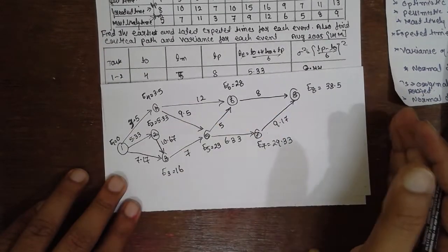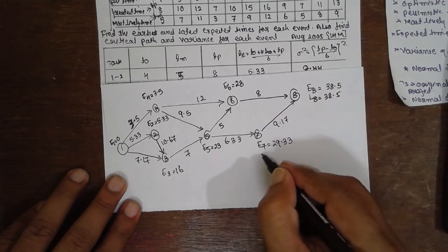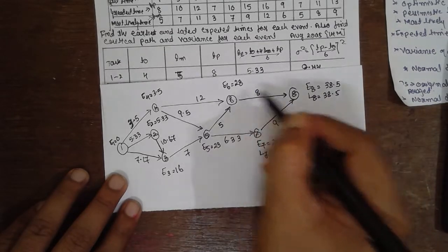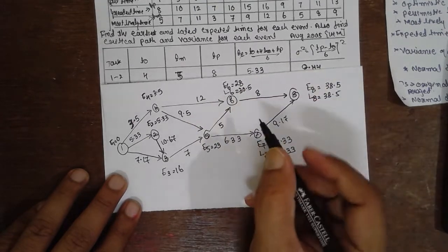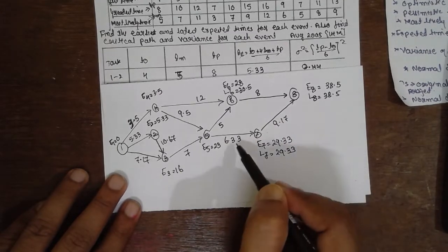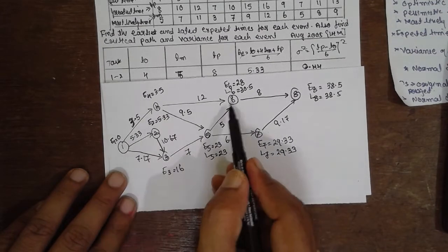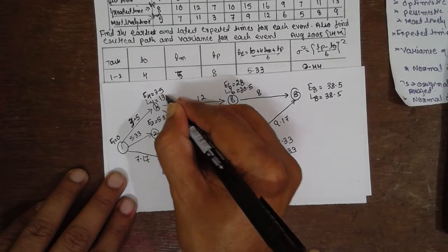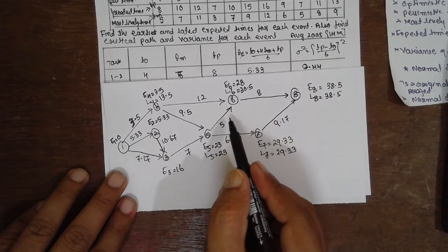When moving from right to left (backward pass), select the smaller values. L8 = 38.5. L7 = 29.33. L6: 38.5 - 8 = 30.5. At the junction for L5, select the smallest: 30.5 or 29.33 - 6.33 = 23. So L5 = 23. L4: 30.5 - 12 = 13.5.